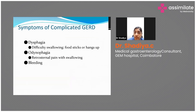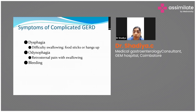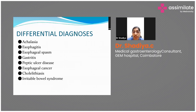When suspecting complications, we must be cautious about whether the patient has dysphagia, odynophagia, upper GI bleeding, anemia, or vomiting — these are dangerous or alarm signs requiring prompt action. Differential diagnoses include achalasia, esophagitis, gastritis, acid-peptic disease, esophageal cancer, cholelithiasis, or irritable bowel syndrome.